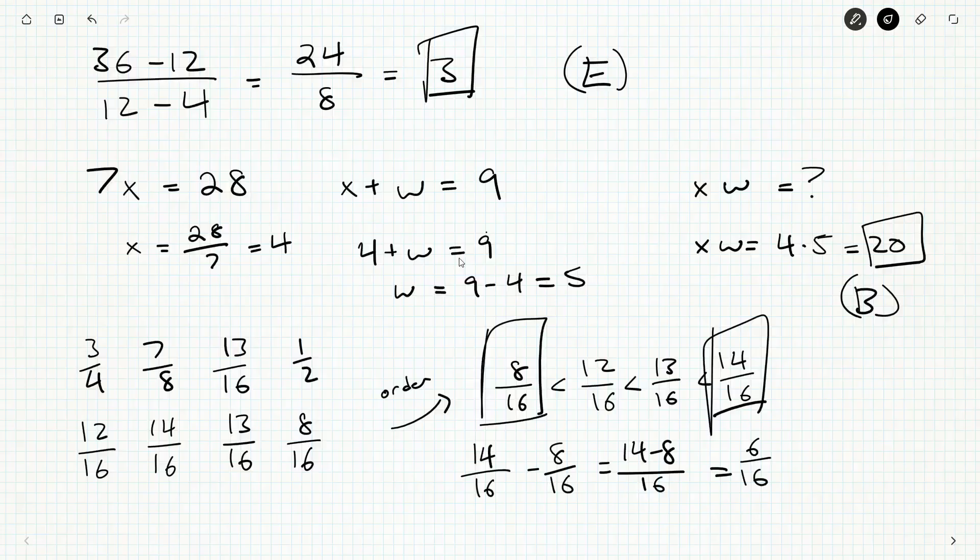That's six over sixteen. Let's simplify it. There's a factor of two in both the top and bottom, so we get three out of eight, and that should be our final answer.